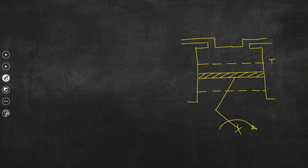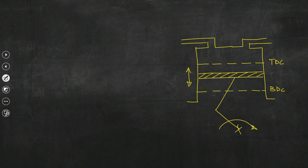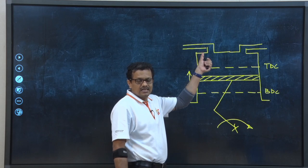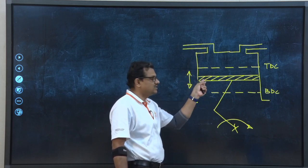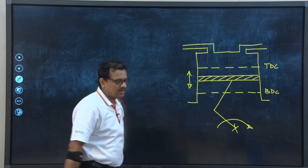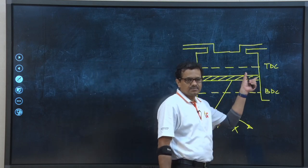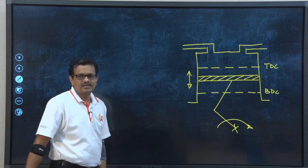This is the top dead center and this is the bottom dead center. The piston has reciprocating motion between these two centers, TDC and BDC. We have seen that air — or air-fuel mixture for a CI engine — will be inducted through the intake manifold into the engine cylinder. The piston has movement between these two stops, and we have identified several strokes.